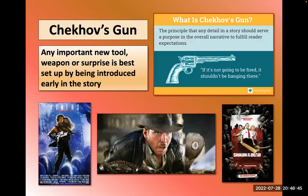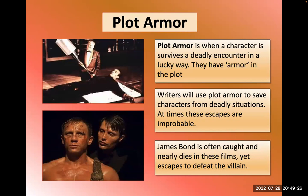Chekhov's gun: anytime you show an important tool in a film, it's got to pay off. In Raiders of the Lost Ark, we learn early that Indiana is afraid of snakes — established in the first or second scene. Later in the film, he has to confront the snakes, confront his worst fear. If you're going to show a gun in the first act, that gun has to be fired and pay off sometime in the film — otherwise why did you bother showing it and building that suspense?